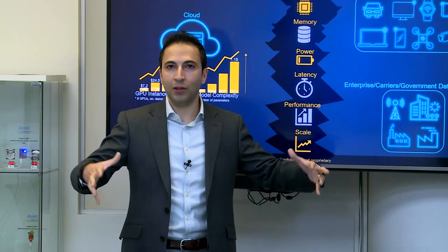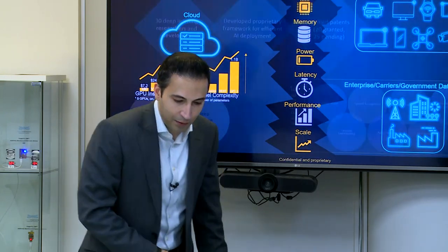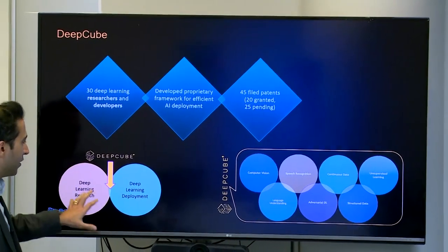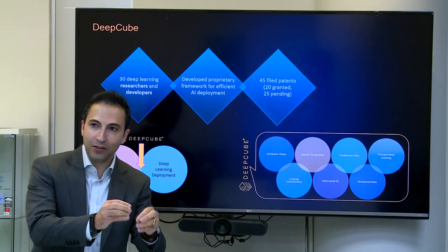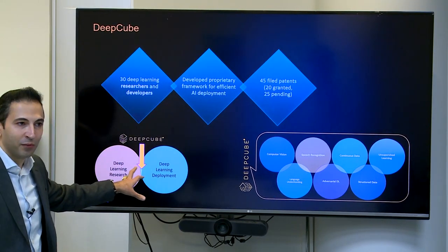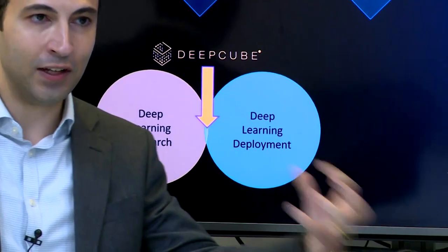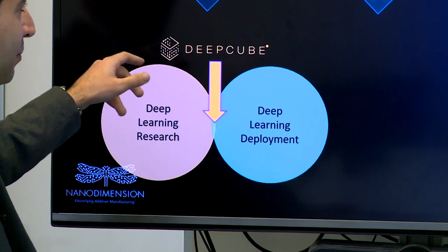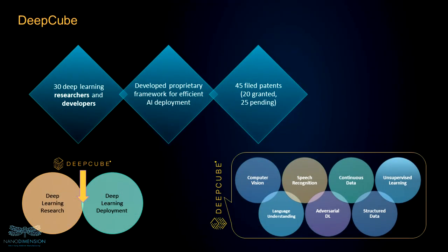This is exactly what the DeepCube division has done. We are a team of 30 deep learning researchers and developers — people skilled at real-world applications and research, which is a rare combination. We've developed a proprietary framework for efficient deployment of AI for real-world applications, not just research. Over 45 filed patents, of which 20 are granted. Not only are we leaders in what we're doing, but we have a large moat around us.